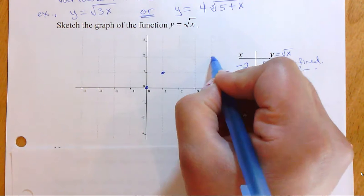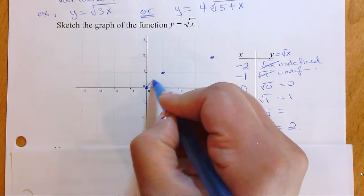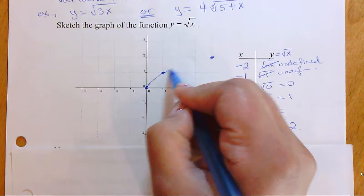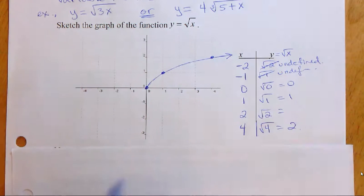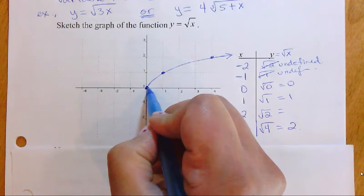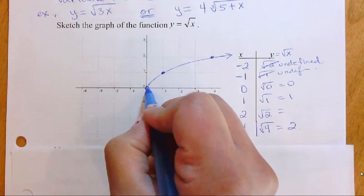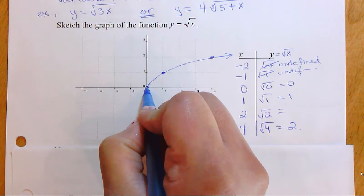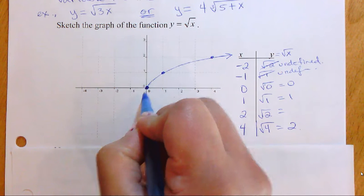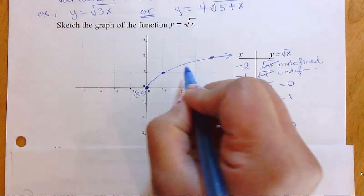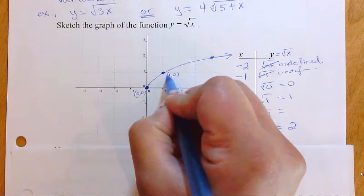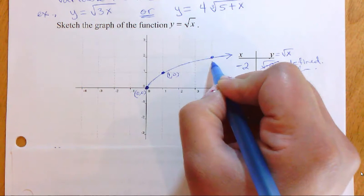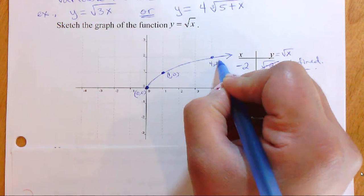Now let's quickly plot those points on the graph. This parent function is what we are going to be transforming — you want a nice curved line with an arrowhead at the end. Note that our graph starts at (0, 0). The first nice point is (1, 1), and the next nice point is (4, 2).